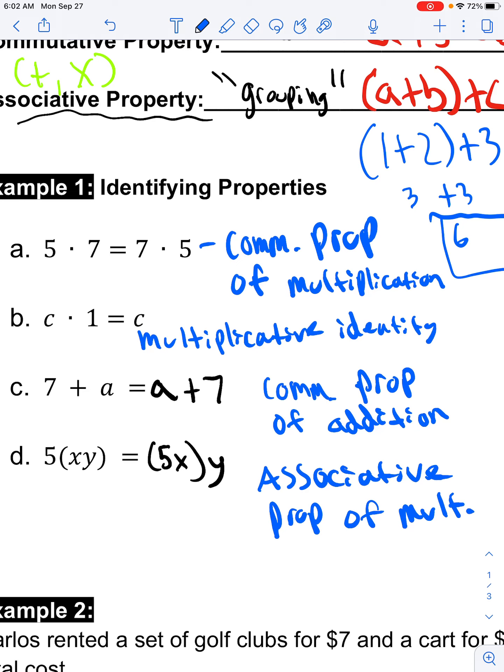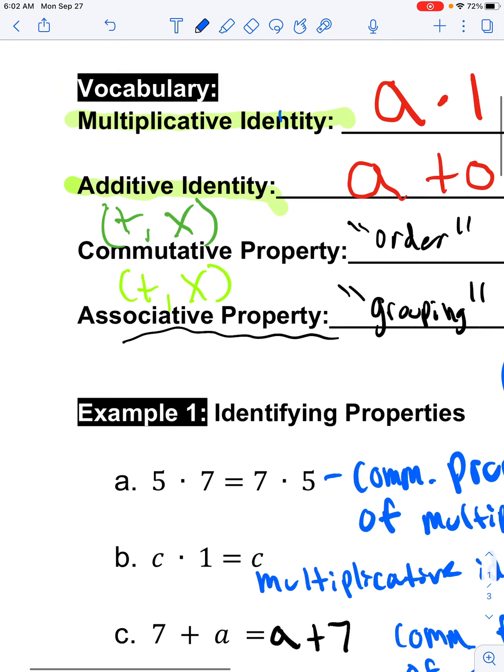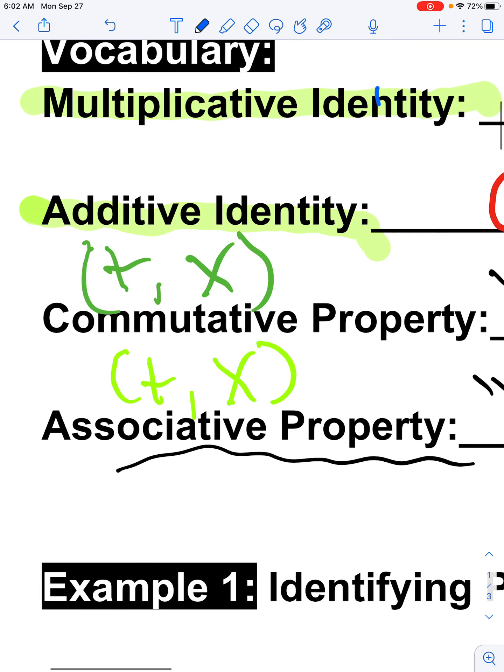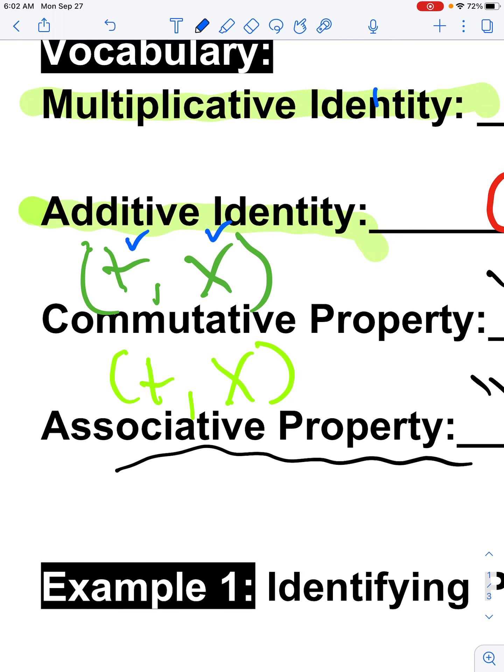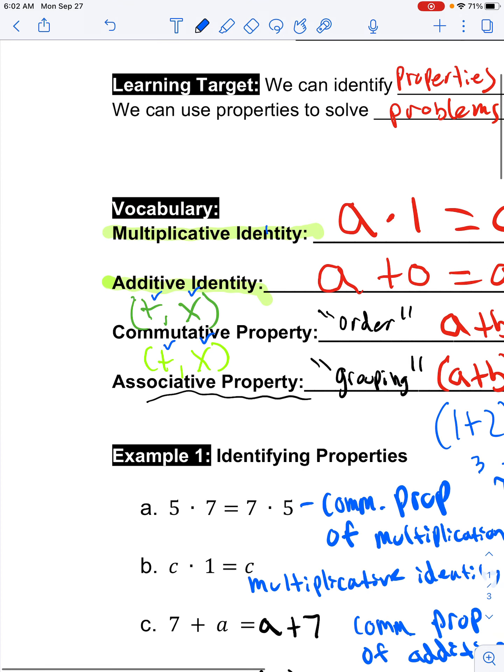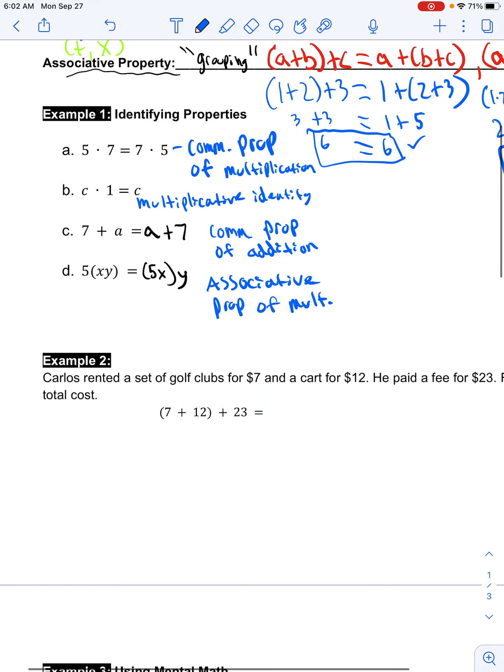I shortened it a little bit. I used com and prop, mult, add, that's totally fine. As long as I can tell, remember for these two commutative and associative, you have to identify whether it's this one or this one. Is it addition or is it multiplication? You have to identify that.